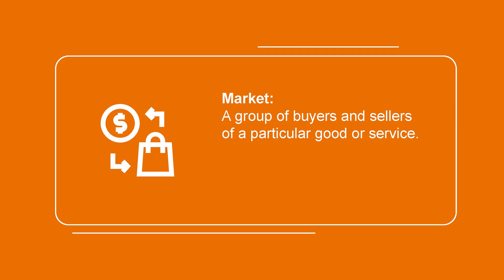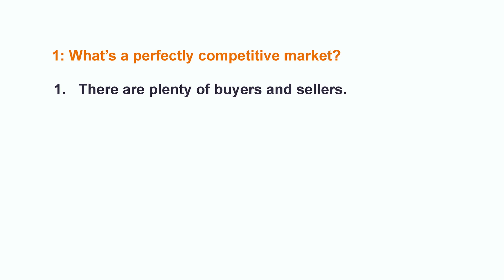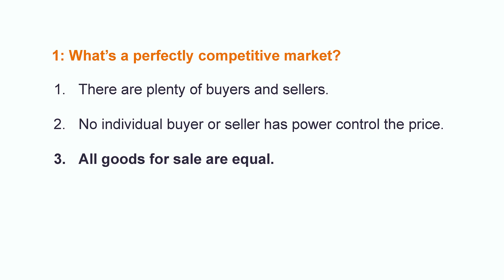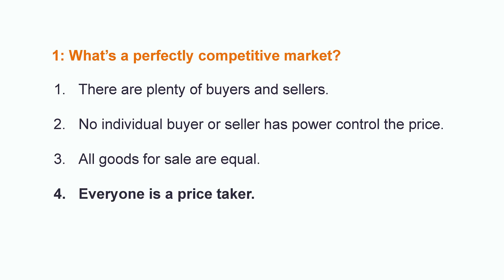First of all, we need to begin by defining and constructing the market. A market consists of a group of buyers and sellers of a particular good or service. Those buyers are the ones who will construct the demand, and the sellers will become the supply. The first type of market we're going to study is perfectly competitive. This means there are plenty of buyers and sellers, so no individual consumer or producer will generate significant changes in the market. No individual or entity has great power or influence, goods for sale are equal — meaning sellers produce the same product — and everyone is a price taker.